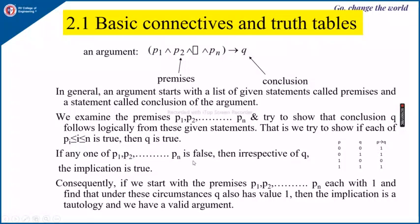If any one of P1, P2, ..., Pn is false, then irrespective of Q, the implication will be true. We can observe from the P implies Q truth table that it is false only when P is true and Q is false. So if P itself is false, then irrespective of whether Q is true or false, P implies Q is true. Consequently, if we start with premises P1, P2, ..., Pn each with value 1 and find that Q also has value 1, then the implication is a tautology and we have a valid argument. This is how we prove that our conclusion arises from the premises.